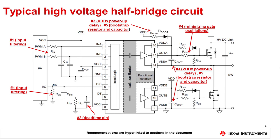Here, we see an example of the typical application circuit for a high voltage half bridge driver, as seen in the UCC2122X, UCC2152X, and UCC2154X datasheets. The datasheet is the best source of information on system design recommendations and how they can be implemented in one's design. This schematic provides a general overview, in addition to detailing key considerations and best practices such as input filtering and bootstrap component selection for optimal system performance, as we'll see shortly.